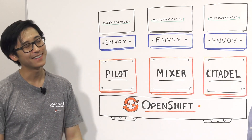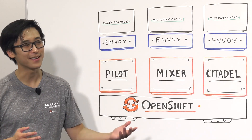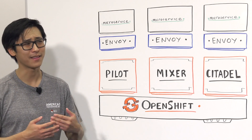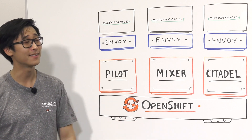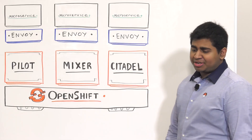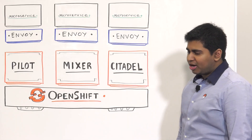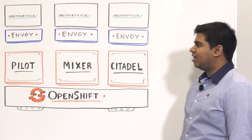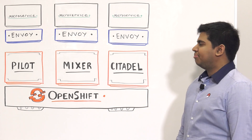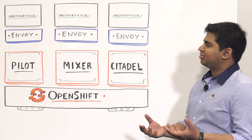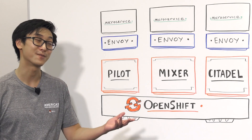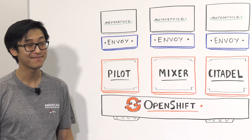So, Asil, I hear you're helping a client migrate their applications onto OpenShift. How's that going? It's actually going pretty good. We're actually breaking down all their monolithic applications into small microservices. Microservices are pretty cool, right?